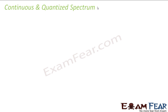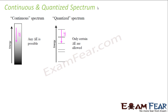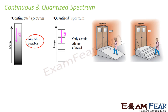Now let us understand the quantized and continuous spectrum. When you say continuous spectrum, delta E can have any value. But when you say quantized spectrum, delta E will have only certain values. To understand this in layman terms — if there are no steps, this student can go from here to anywhere. But if you have made steps, this person can move only from step 1 to 2 or 1 to 3 — only to fixed positions.